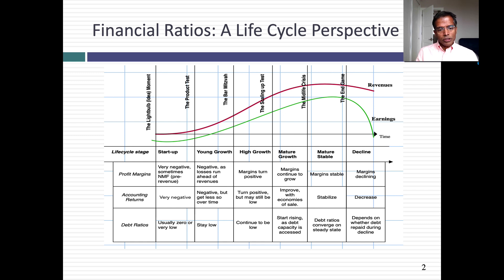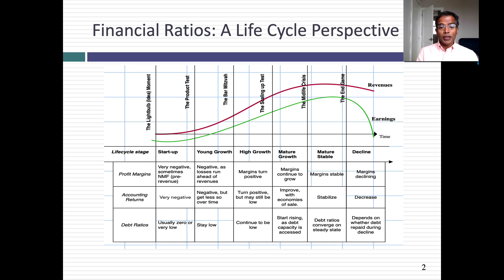When you look at accounting returns, you'll see the same phenomenon play out. Young companies will often have negative accounting returns, or returns that cannot even be computed because something is not available, like invested capital. As companies mature, those negative accounting returns will become positive. As companies reach their peak, accounting returns will also peak. And when they become mature companies, they'll defend that return — until they decline, and accounting returns will decline.